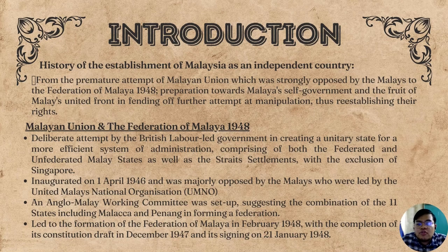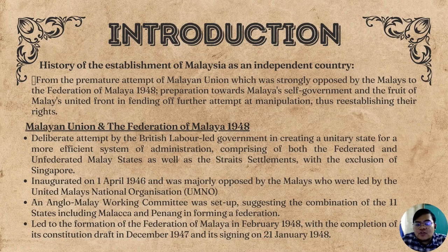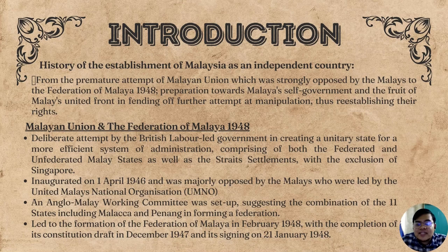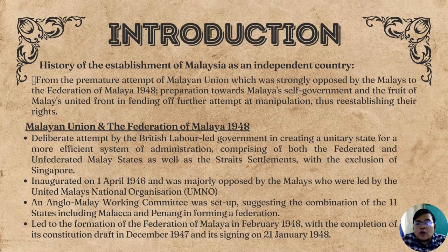As a brief historical introduction, the Malayan Union was seen as a deliberate attempt by the British labour-led government to create a unitary state comprising both the federated and unfederated Malay states as well as the Straits Settlements, but excluding Singapore. It was inaugurated on 1 April 1946 and was majorly opposed by the Malays led by UMNO, resulting in an Anglo-Malay Working Committee being set up, which led to the Federation of Malaya 1948, with its constitution draft completed in December 1947 and signed on 21 January 1948.